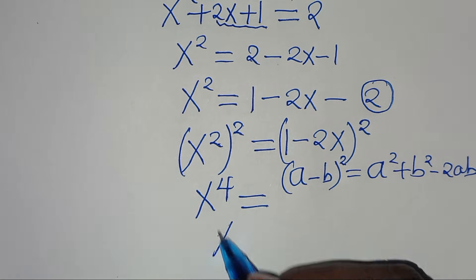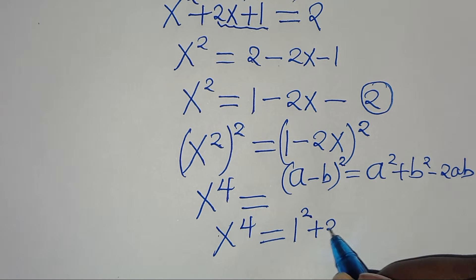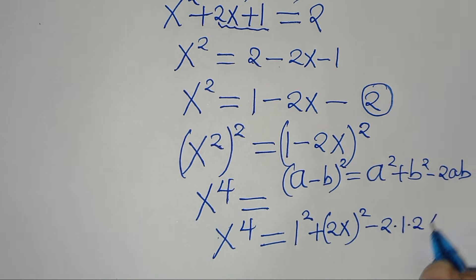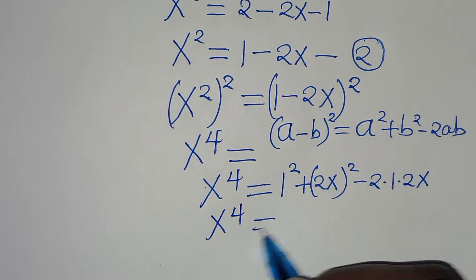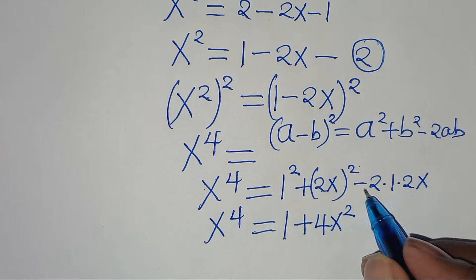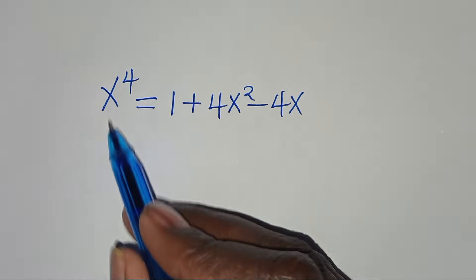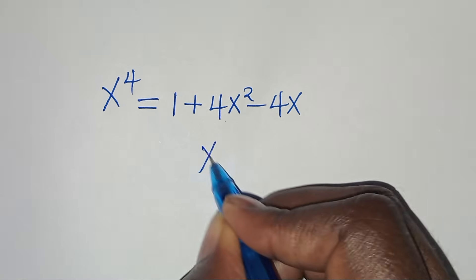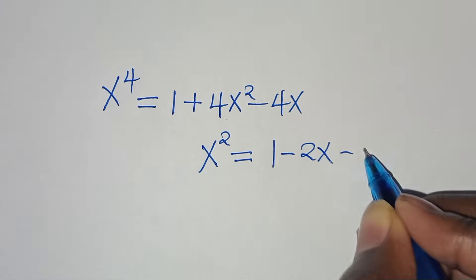Applying this algebraic identity, we have x to the power of 4 equal to 1 squared plus 2x raised to the power of 2, then minus 2 multiplied by 1 multiplied by 2x. So x to the power of 4 equals 1 plus 4x squared minus 4x. Now from equation 2, we have x squared equals 1 minus 2x. So let's substitute x squared with 1 minus 2x, giving us x to the power of 4 equals 1 plus 4 multiplied by 1 minus 2x, minus 4x.